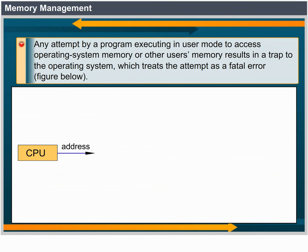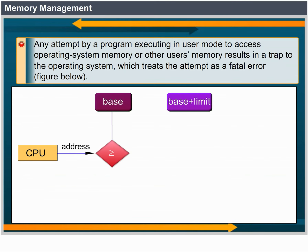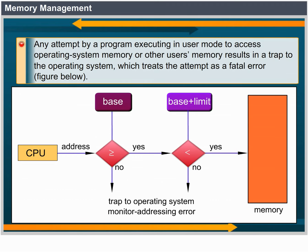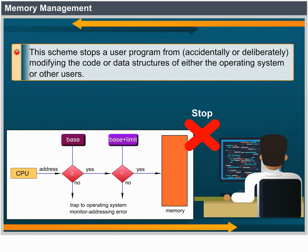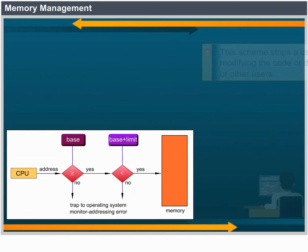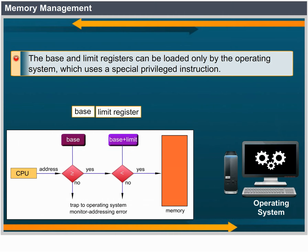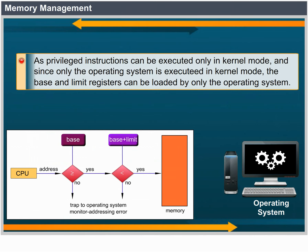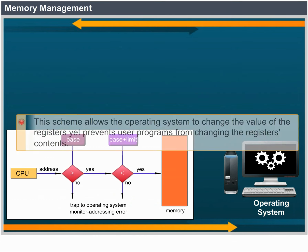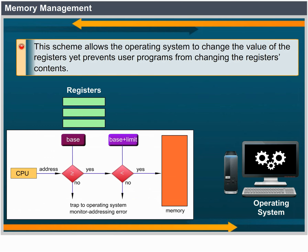Protection of memory space is accomplished by having the CPU hardware compare every address generated in user mode with the registers. Any attempt by a program executing in user mode to access operating system memory or other users' memory results in a trap to the operating system, which treats the attempt as a fatal error. This scheme prevents a user program from accidentally or deliberately modifying the code or data structures of either the operating system or other users. The base and limit registers can be loaded only by the operating system using a special privileged instruction.